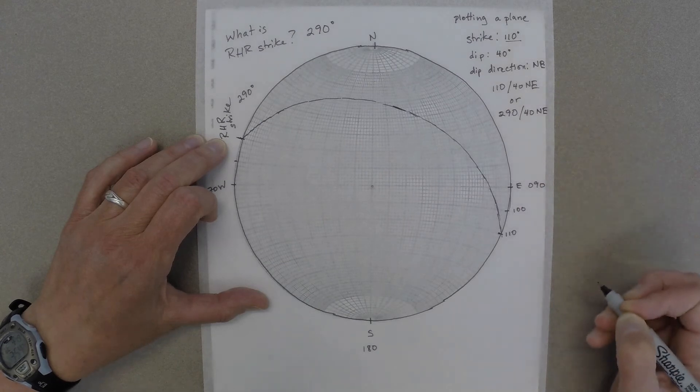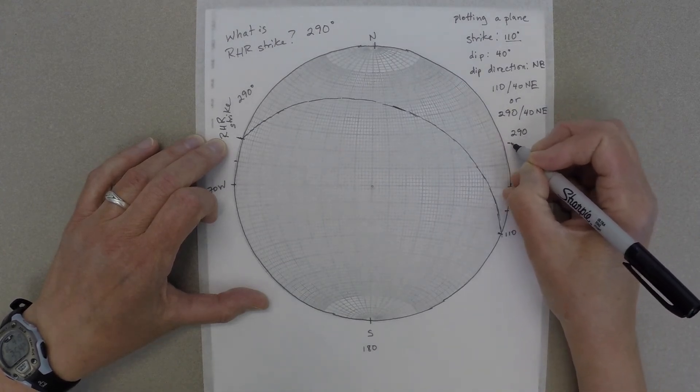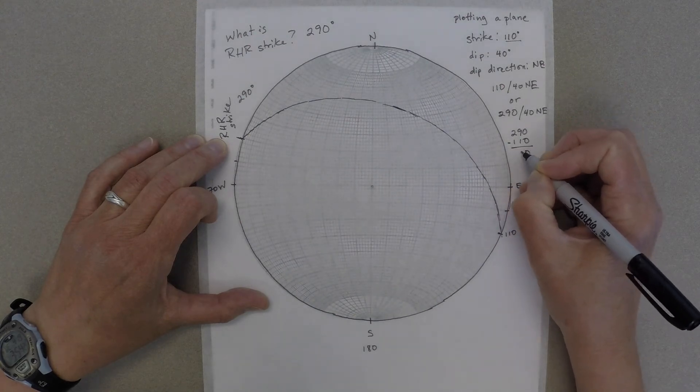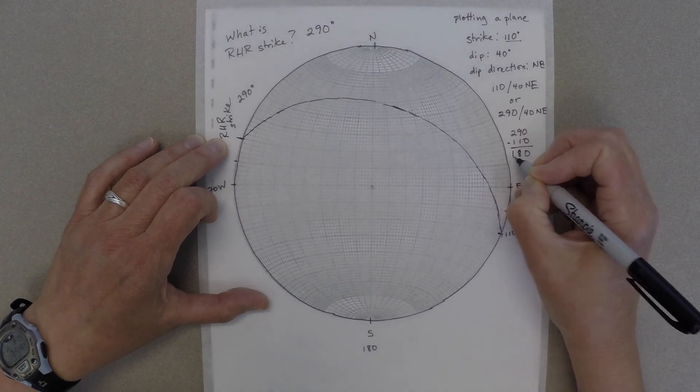That's the same plane that is also described by 110 degrees, 40 to the northeast. The angle difference between your right-hand rule strike and the other strike is always 180 degrees.